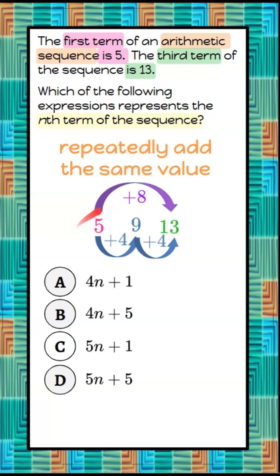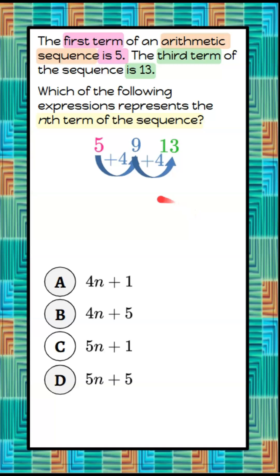So I can use the common difference between the first and third terms to find the common difference between each term. Now that I know the common difference, and I'm going to repeatedly add 4 in this arithmetic sequence, we can work on our formula.